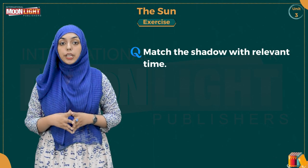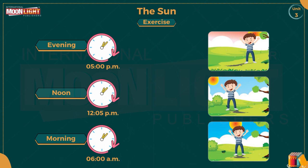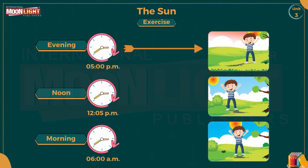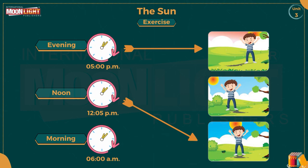Question number 2: Match the shadow with the relevant time. Number 1: Evening, 5 pm — the shadow is long. Number 2: Noon, 12 pm — the shadow is short. Morning, 6 am — we will match this picture with the corresponding shadow picture.